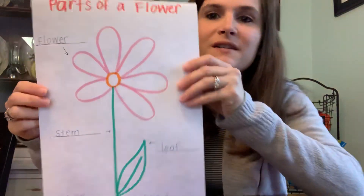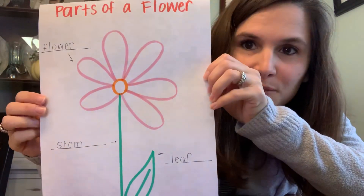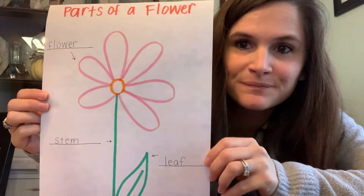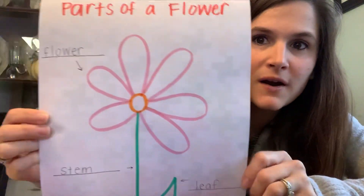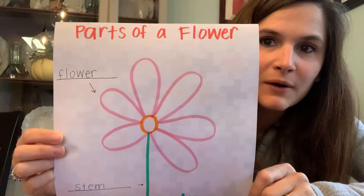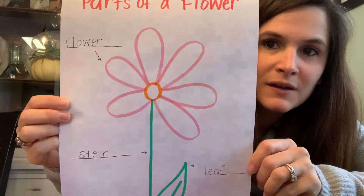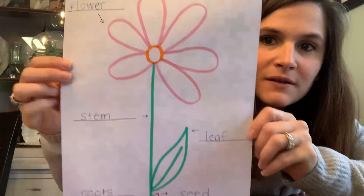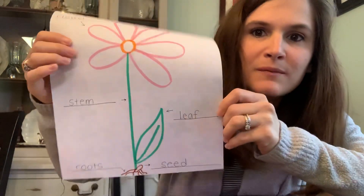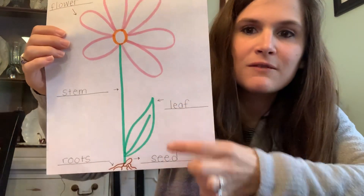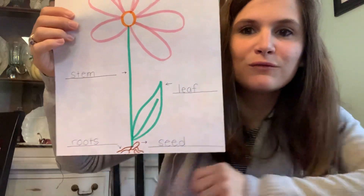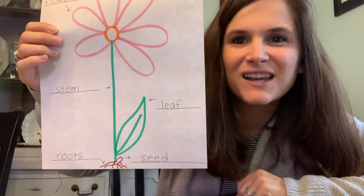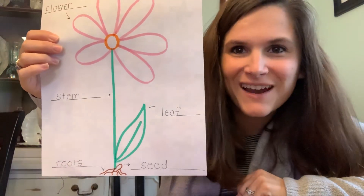And that's what gives us those pretty petals. So there's all of our parts of a flower: flower, stem, leaf, seed, and roots. Go ahead and give it a try at home.